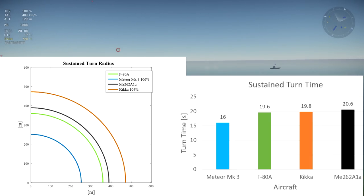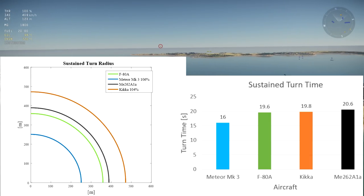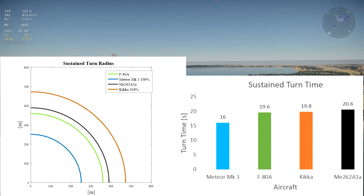The F-80 turns the second tightest, followed by the ME262, and then the Kika with its wide turn radius. The graph on the right shows the sustained turn time, and they follow the same trend as the turn radius, except for the Kika which compensates for its wide turn with a high thrust-to-weight ratio, thereby going around the turn circle at a higher speed.